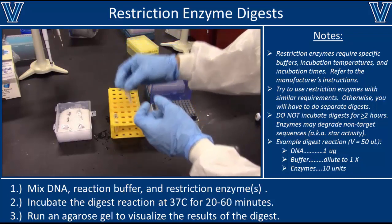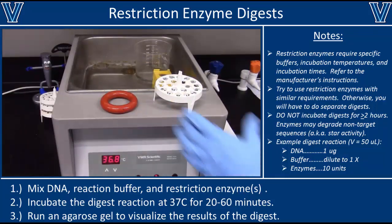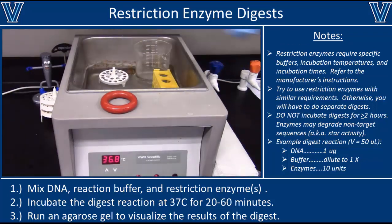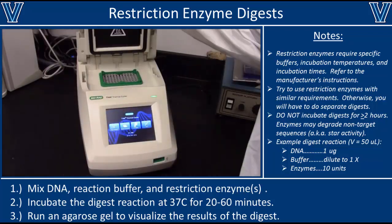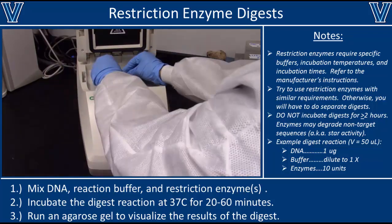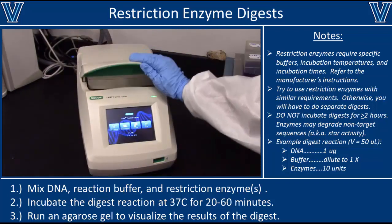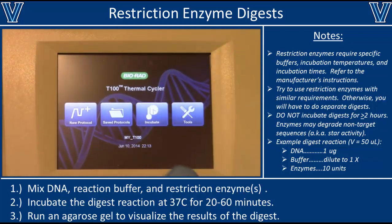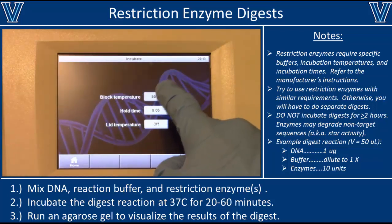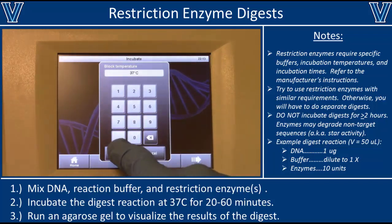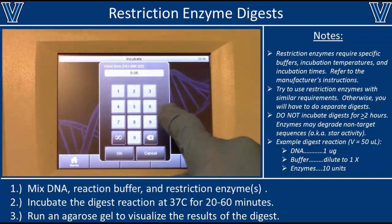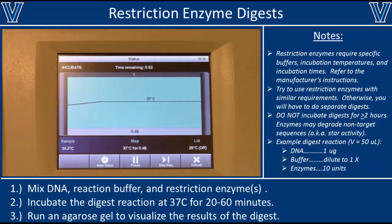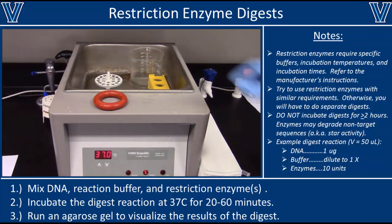Once your tubes are ready, incubate them at the required temperature. Most enzymes require 37°C and can be incubated in a water bath, or alternatively in smaller PCR tubes in a thermal cycler. In this case we'll be incubating at 37°C for 45 minutes. However, some restriction enzymes require even higher temperatures, so be sure to check the manufacturer's instructions for the correct incubation temperature.